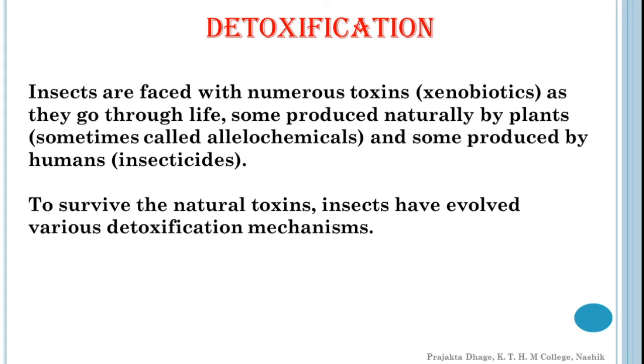Insects are faced with numerous toxins as they go through life. Some are produced naturally by plants and some produced by humans. To survive the natural toxins, insects have evolved various detoxification mechanisms. These same mechanisms also sometimes allow insects to overcome insecticides. The level and type of mechanisms differ greatly, resulting in differing toxicity among different stages, populations and species of insects. Knowledge of detoxification allows us to better incorporate chemical resistance mechanisms in crops and to better select insecticides that will be effective when applied.